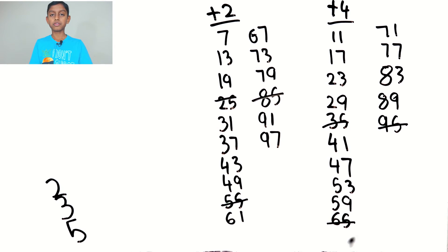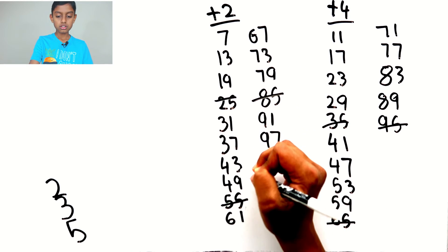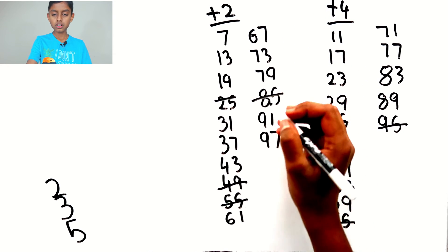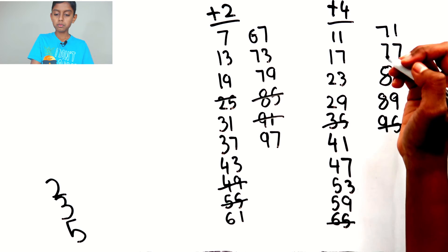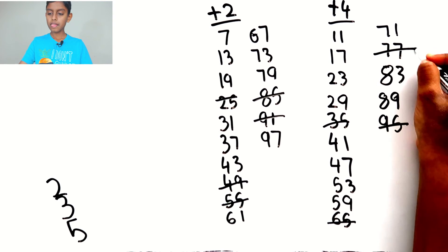Now we need to find the multiples of 7 which is 49, 91, and 77.